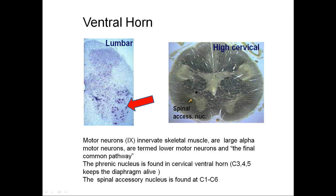We call it the corticospinal tract from cortex to alpha motor neuron. We call it the corticobulbar tract from cortex to cranial nerve motor nuclei. 'Bulbar' is an old term for brainstem. So we have corticobulbar and corticospinal tracts both influencing movement.